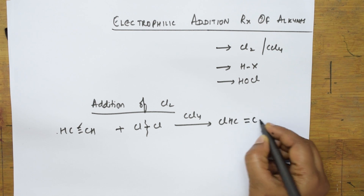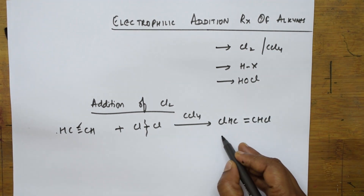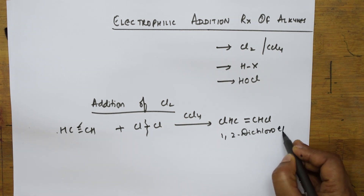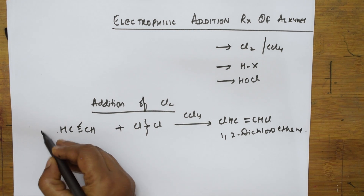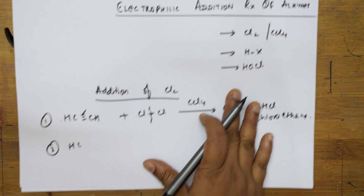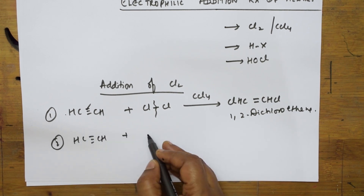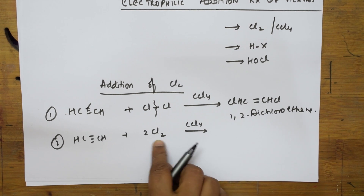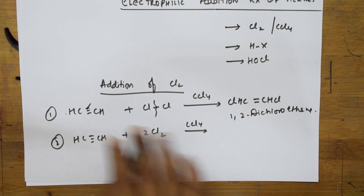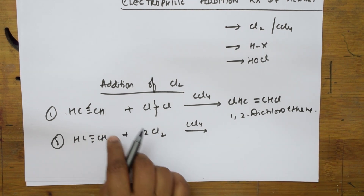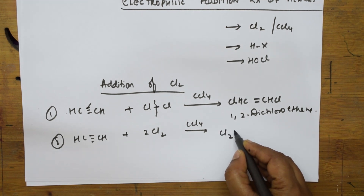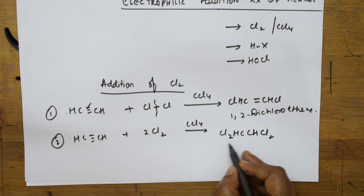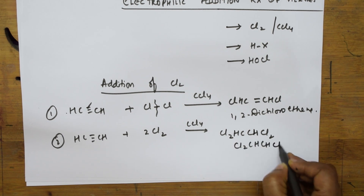This is where most students make mistakes. If I take the same acetylene and introduce two molecules of Cl₂ — so four chlorines total — the first pi bond is broken and two Cls are added, then the second pi bond is broken and two more Cls are added. You get the compound Cl₂CH–CHCl₂. Both ways of writing it are the same.